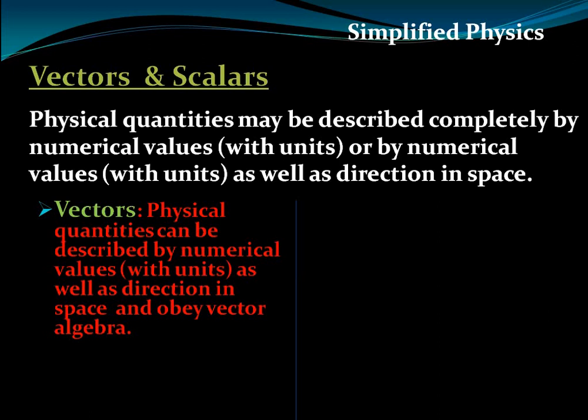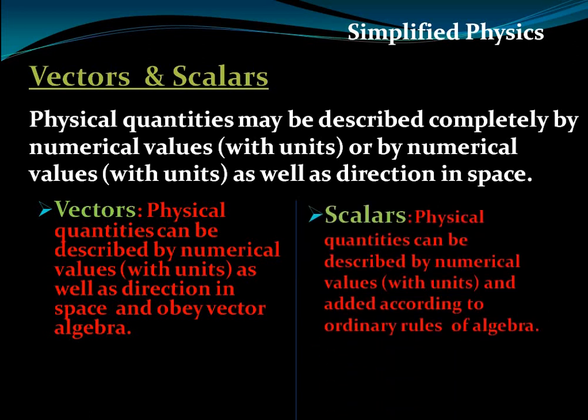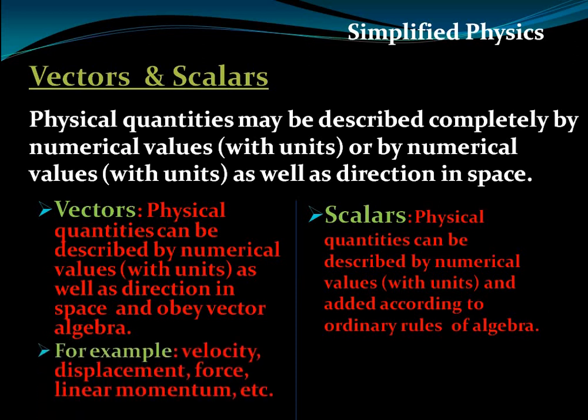Vectors are physical quantities that can be described completely with numerical values with units, require direction, and must obey vector algebra — such physical quantities are vectors. Some physical quantities can be completely described with numerical values with units; such quantities are called scalars, and they obey ordinary rules of algebra. Examples of vector quantities include velocity and displacement; examples of scalars include distance and time.